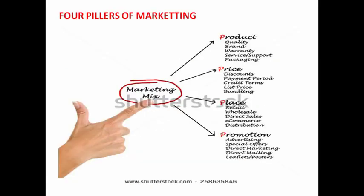The four pillars of marketing: here we have some marketing concepts. The pillars are product, price, place, and promotion. A product is what satisfies customer needs — the major aim of any product is to satisfy the customer. Product includes quality, brand, warranty, service, and packaging.